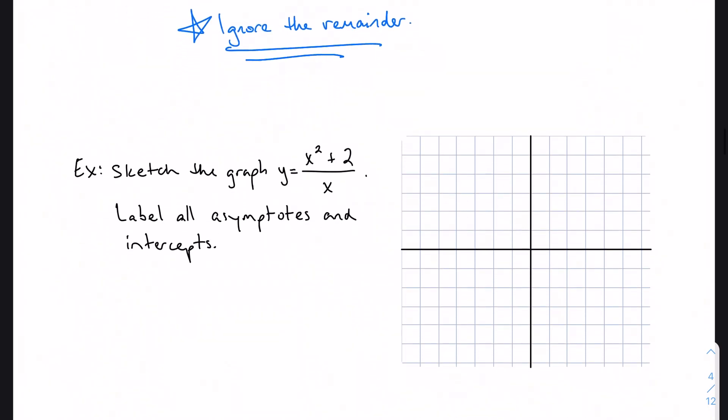So let's try a quick example. Sketch the graph, label all asymptotes and intercepts. It's actually easiest in this case to start with my asymptotes and my intercepts. So let's start with my asymptotes. Vertical asymptotes - well, I can't divide by 0, so when x is 0, that would create division by 0. So there's my vertical asymptote.